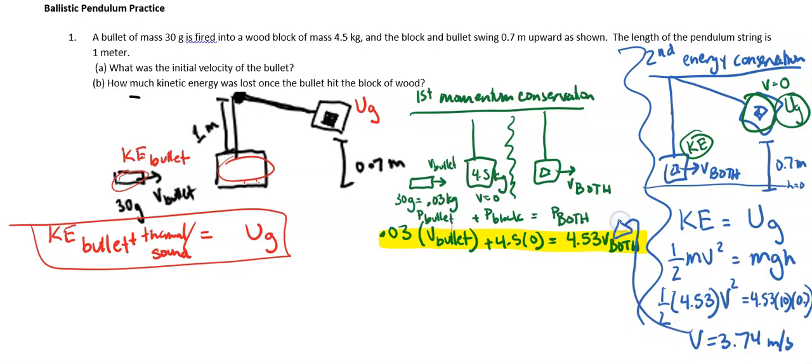So we can plug that back into our momentum equation. So now let's go ahead and just do the final math. So we have 0.03 times the bullet plus this term will just be 0 equals 4.53 times 3.74. And I plug that all in,